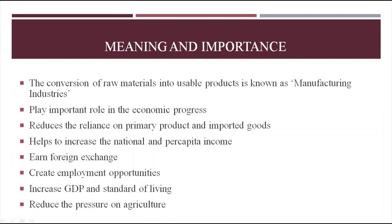First of all, let us discuss the meaning and importance of industry. The conversion of raw materials into usable products is known as manufacturing industry. For example, converting cotton into cloth, sugarcane into sugar, and iron ore into steel — that is the conversion of raw materials into finished goods.